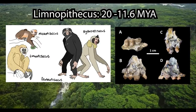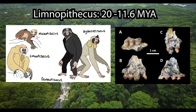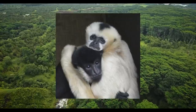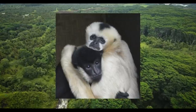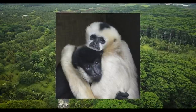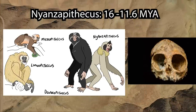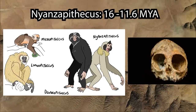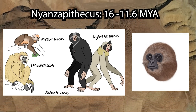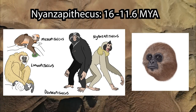Limnopithecus is similarly thought to have been gibbon-like, although whether it is an ancestor of modern hylobatids has yet to be determined. It may be more likely than Dendropithecus, as Limnopithecus is thought to be monomorphic in its large canine teeth, just like modern hylobatids. Nyanzapithecus is another potential gibbon relative, although the consensus is currently that small apes appear to have convergently evolved gibbon-like facial features, given these three species lack definitive hylobatid apomorphies.